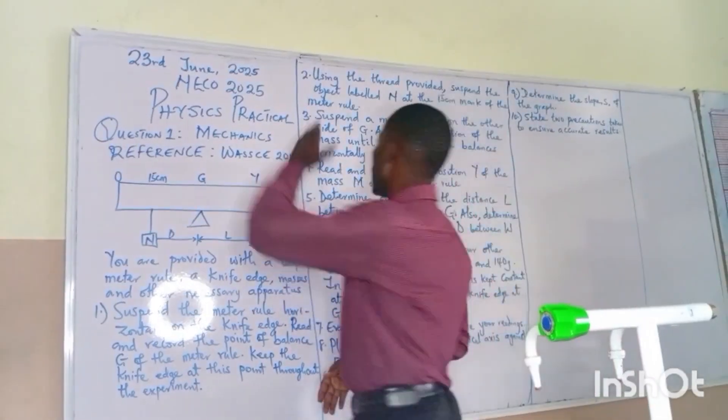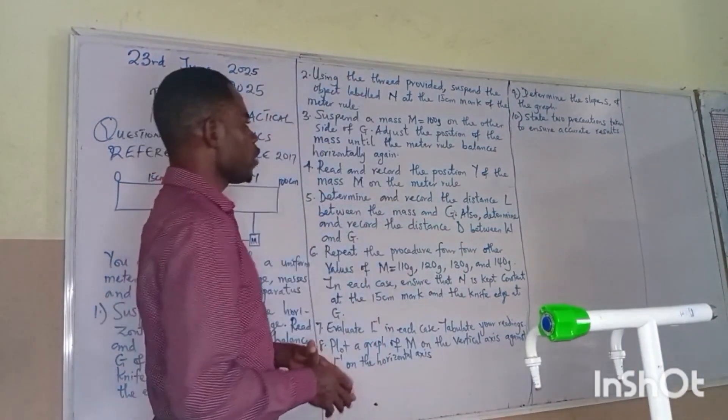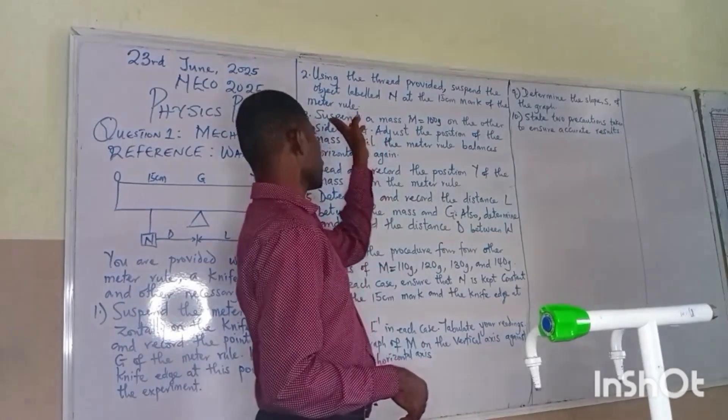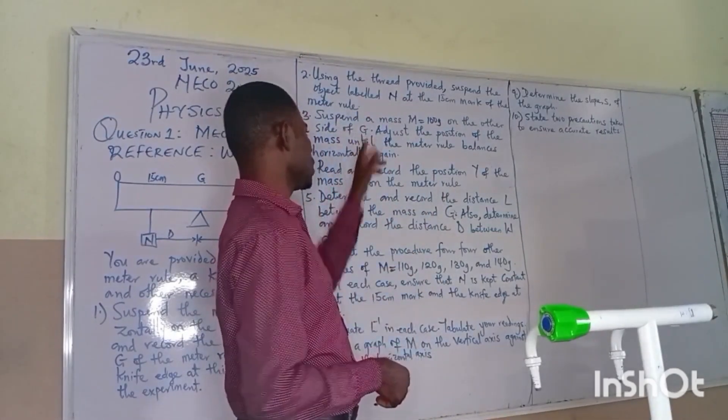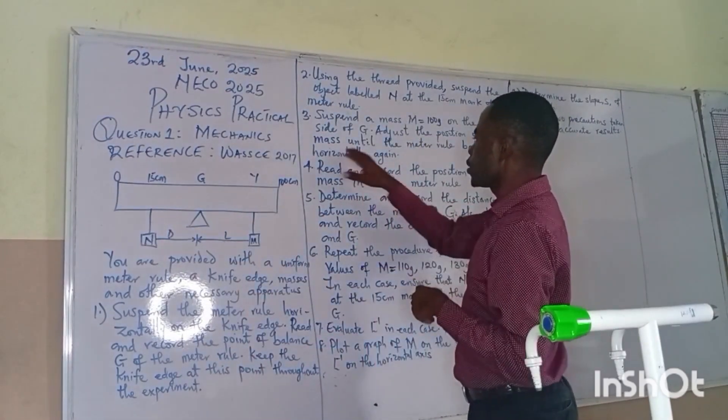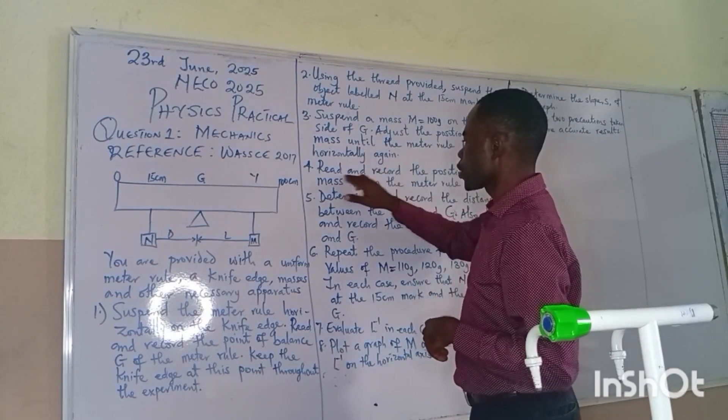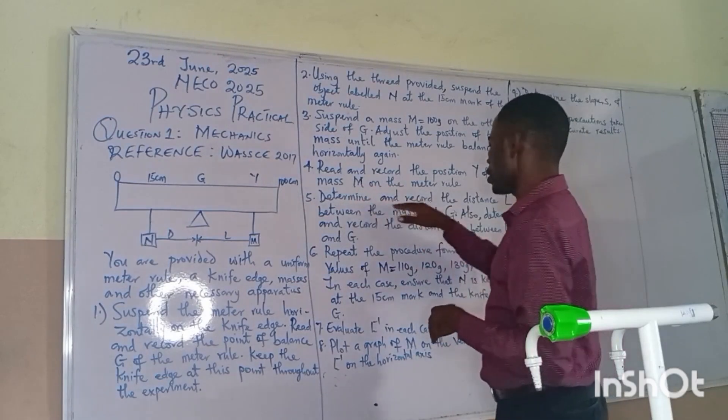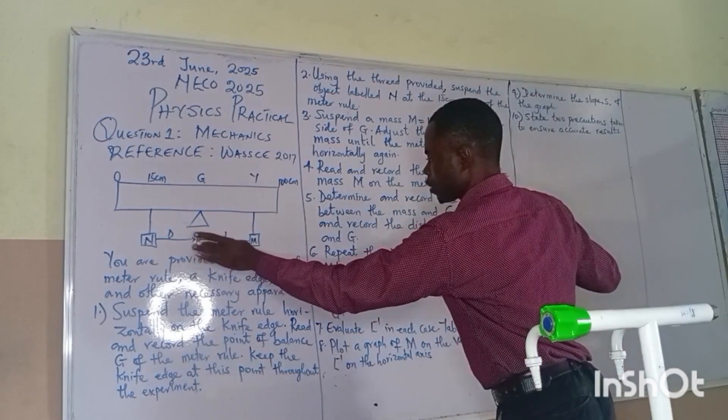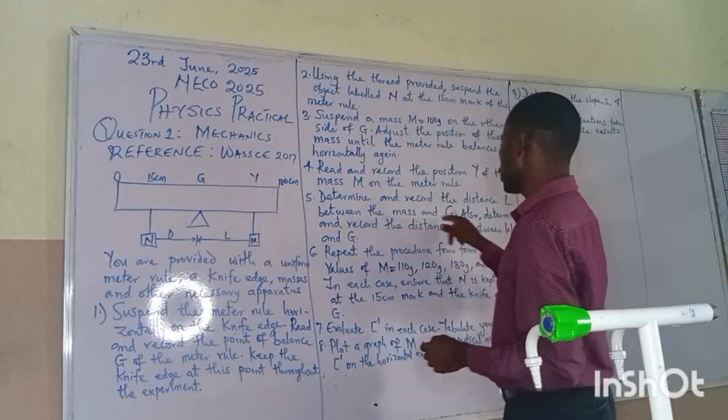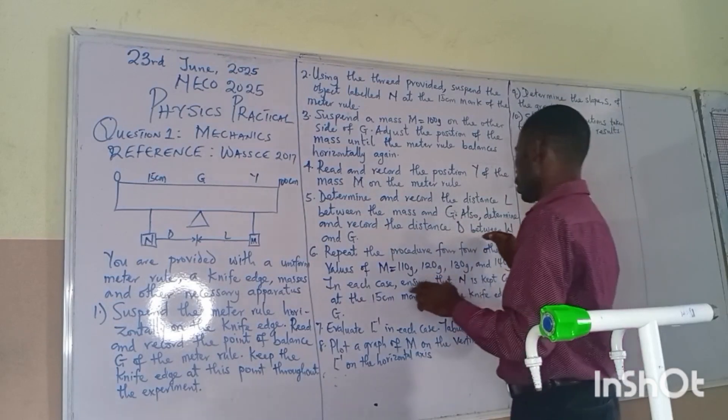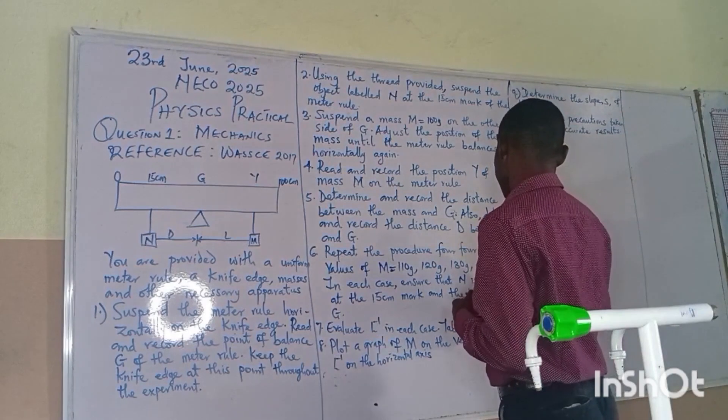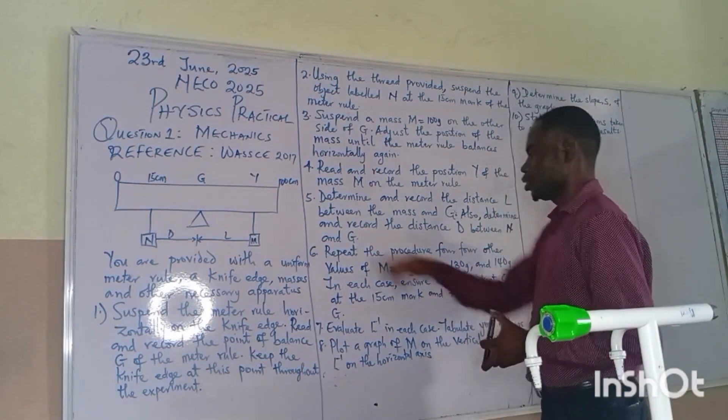I want to read out the instructions first before we do the experiment. Using the thread provided, suspend the not given, labeled N at the 15cm mark of the meter rule. Suspend the mass M 100g on the other side of G. Adjust the position of the mass M 100g on the meter rule. Determine and record the distance L, the distance between the mass and G. Also determine and record the distance D between D and N and G.